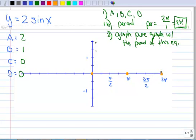I know I have a maximum at pi over 2, which is at 1, and I have a minimum at 3 pi over 2 at negative 1. And then I'm going to connect these. Okay, good. So there's the pure graph with the period of this equation, and yes, the period is 2 pi.